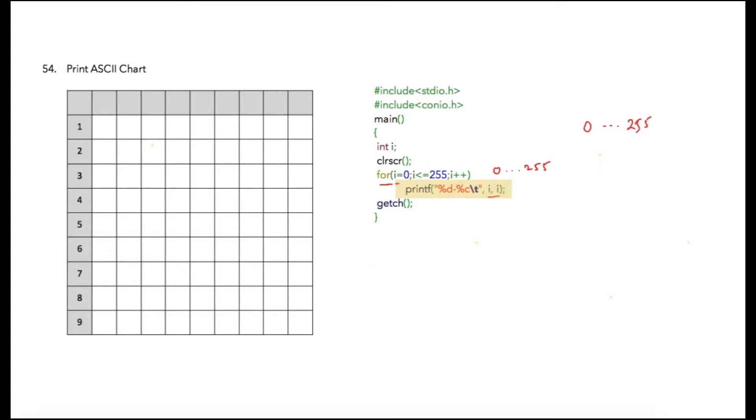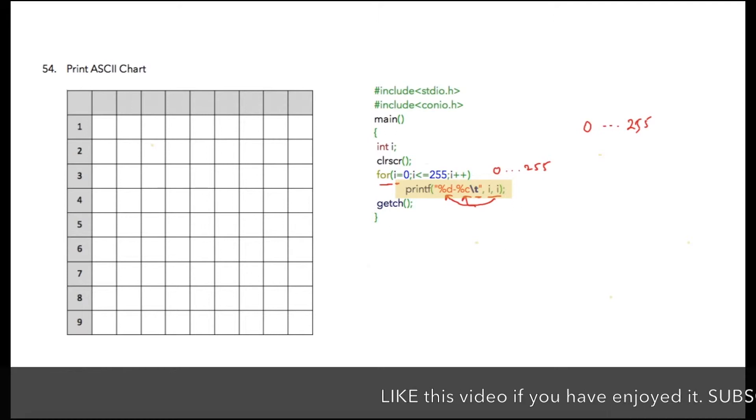Inside the for loop, I am printing i twice - first as an integer value and then as a character value. I'm also adding \t, which is a tab character, to add some space between two prints on each iteration.